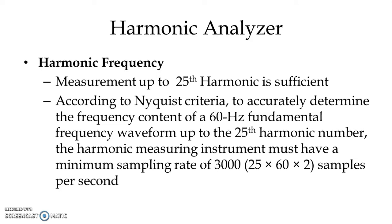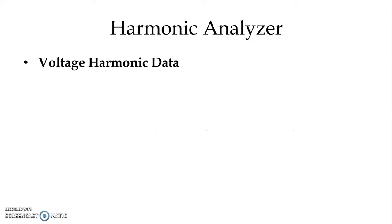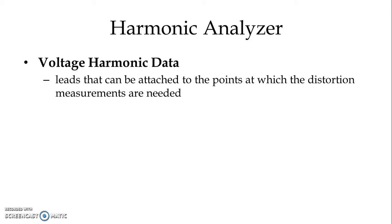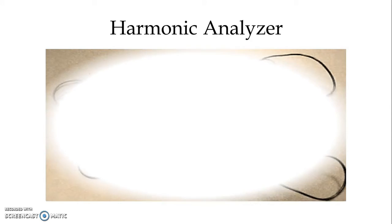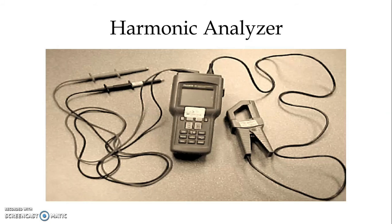We have voltage harmonic data and we use voltage leads to measure voltage distortion data between points. We have leads that can be attached to the points at which the distortion measurements are needed. In the figure we can see one hand-held type harmonic analyzer with voltage leads, current probes, and a meter with a screen which displays the snapshot of the harmonic distortion.